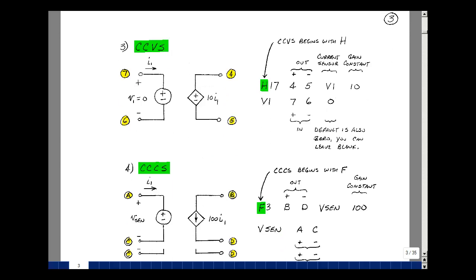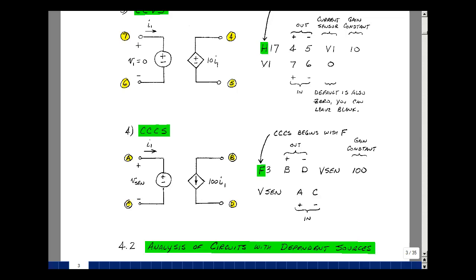And then lastly, you can have a current controlled current source. This begins with the letter F in SPICE. Again, I have a plus and minus terminal because every component has a definition for absorbing power. And this would be from B to D. B and then D. And you don't have to use numbers here. You can use letters, you can use names, whatever might make sense.